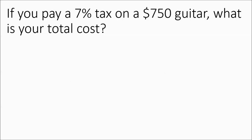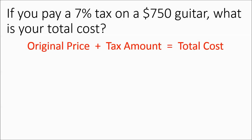This first problem: if you pay a 7% tax on a $750 guitar, what is your total cost? This is going to be a two-operation problem — you're going to multiply, then add. You're going to have to figure out the tax amount by doing the multiplying first. You're always going to do the multiplying first.